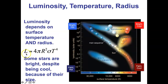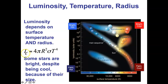The luminosity of a star depends on the star's radius and its temperature. So if you have a graph of luminosity versus temperature, you can look at this graph and get a sense of the size of the star without having to do the math. Stars have high luminosities either because they're large or because they're hot, or both. Stars can be low luminosity either because they're small or because they're cool, or both.